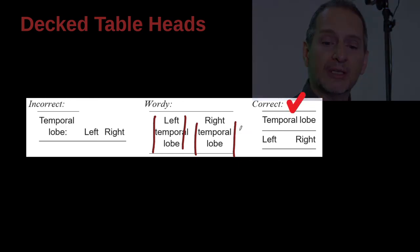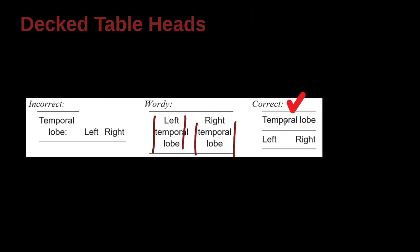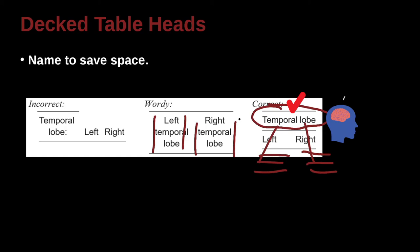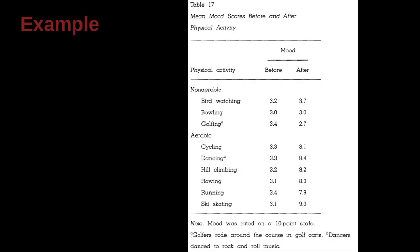Or we could go ahead and say, left temporal lobe, what are the results? Right temporal lobe, what are the results? But the easiest way to do it is this decked way, which is, I'm looking at the brain, and it has two parts. And so now I'm going to give you the data for the left part, and here I'm going to give you the data for the right part, and that's called a decked table head. Extremely useful for saving space.